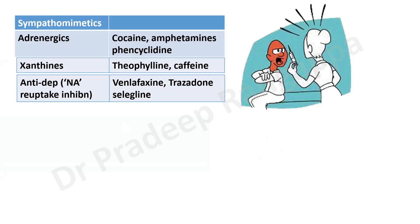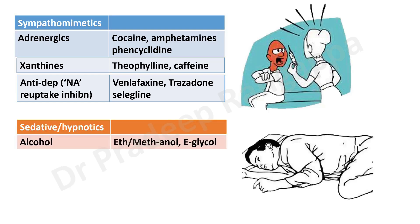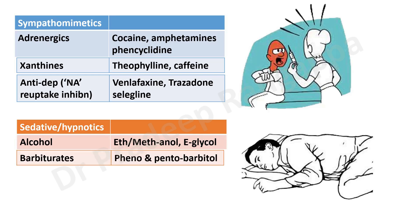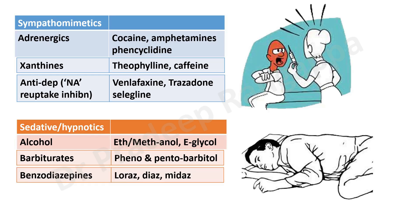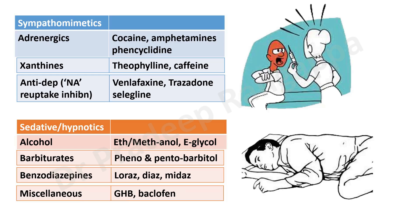Sedative hypnotics cause sedation — alcohols (ethylene glycol, ethyl alcohol, methyl alcohol), barbiturates such as barbitone and pentobarbital, and benzodiazepines are the most common drug toxicity seen in intensive care, including clobazam, diazepam, midazolam, and so on. Miscellaneous agents include gamma-hydroxybutyrate and baclofen. These are the categorizations of drugs causing acute poisoning with neurological manifestations.